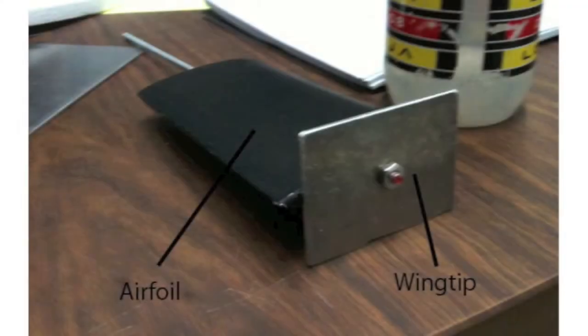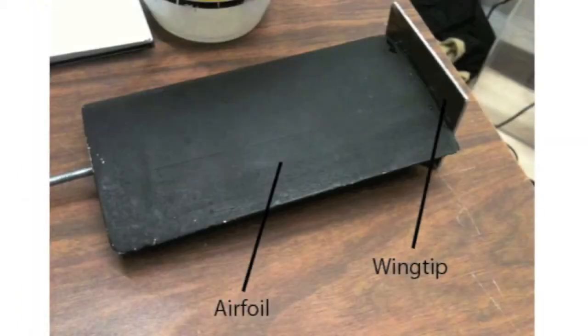In order to visualize the winglet effect, an aluminum plate was bolted to the end of an airfoil. The airfoil had a length of approximately four inches and a chord of about two and a half inches.